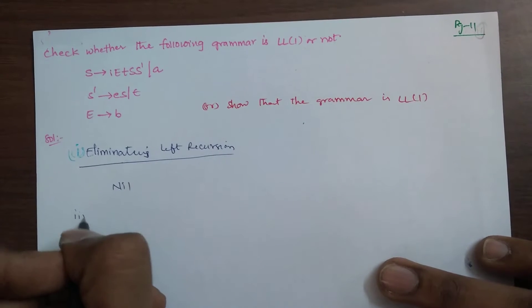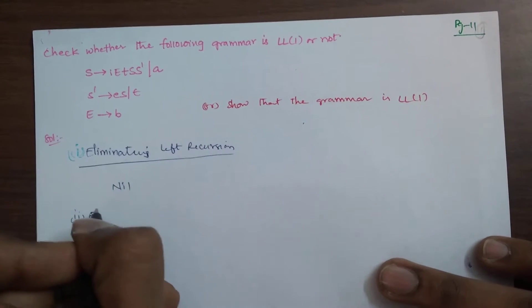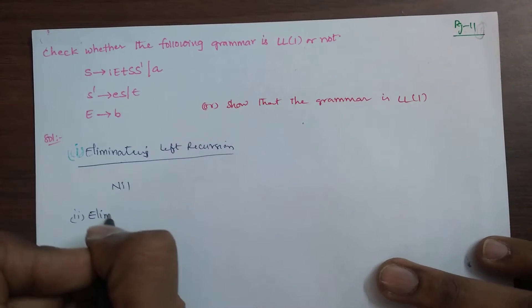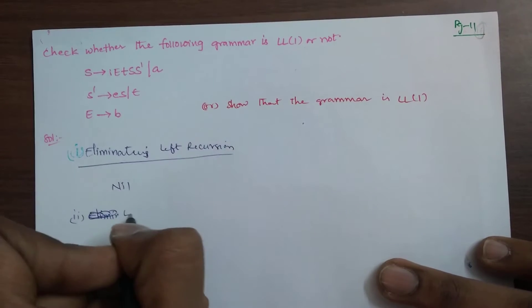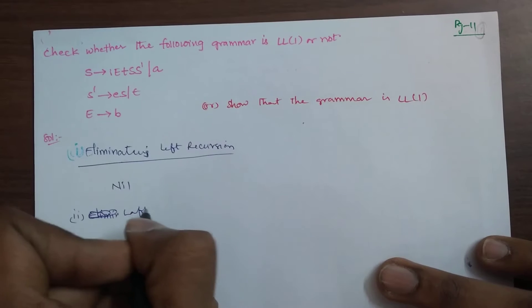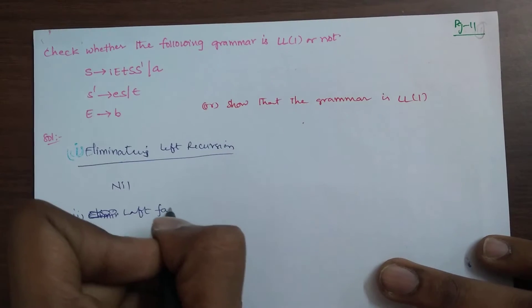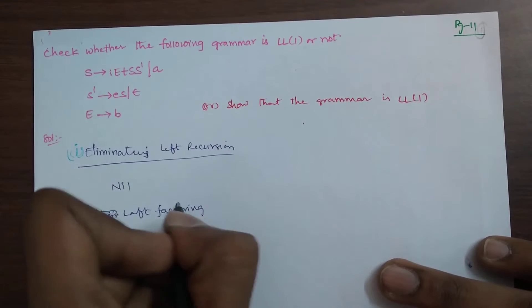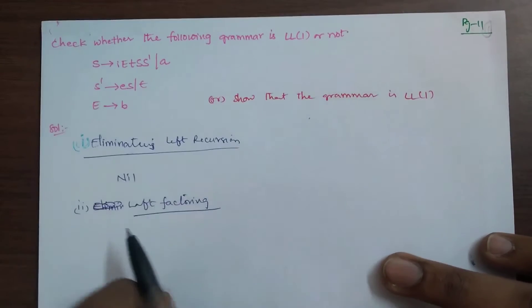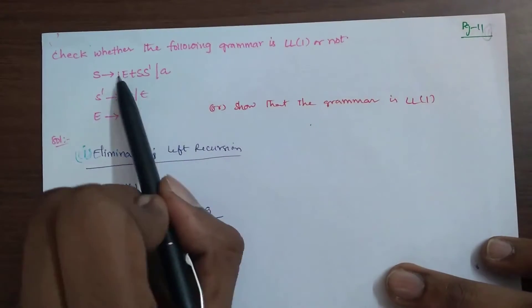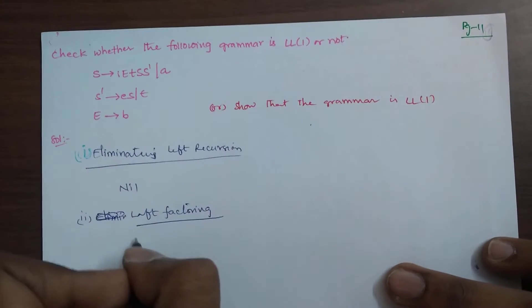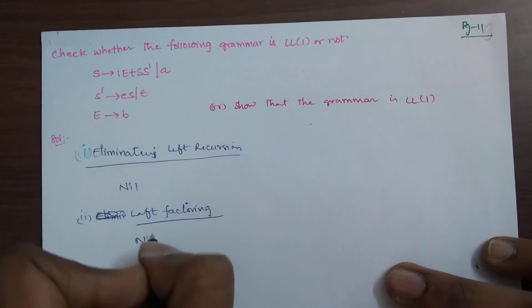Second point: eliminating left factoring. Left factoring — checking if LL(1) is applicable. Left factoring is nil.